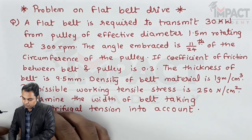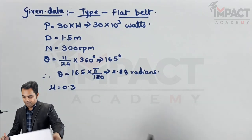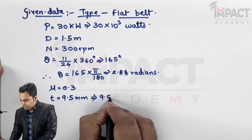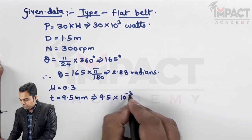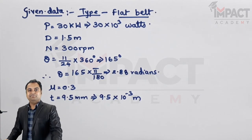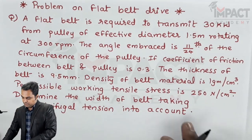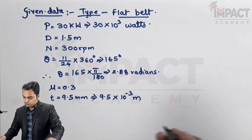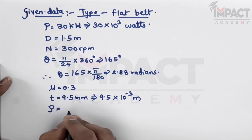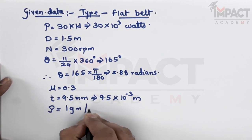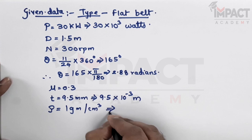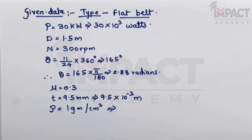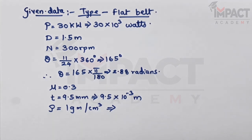The thickness of the belt is 9.5 mm, which converts to 9.5 × 10⁻³ meters. The density of the belt material is 1 gram per centimeter cube, which needs to be converted to kg per meter cube.